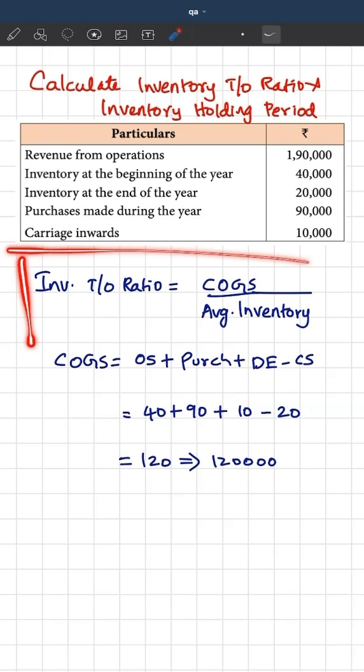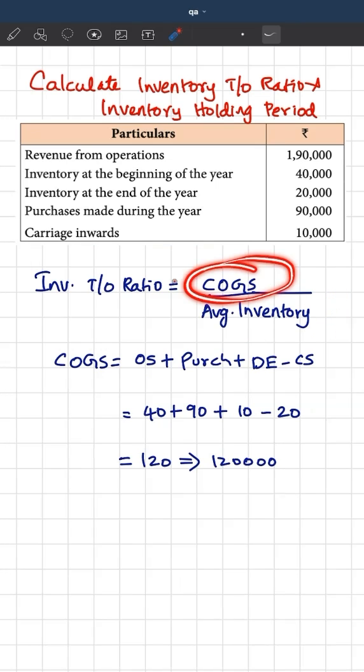First of all, the formula for inventory turnover ratio is cost of goods sold divided by average inventory. So first, let's find out what is cost of goods sold.